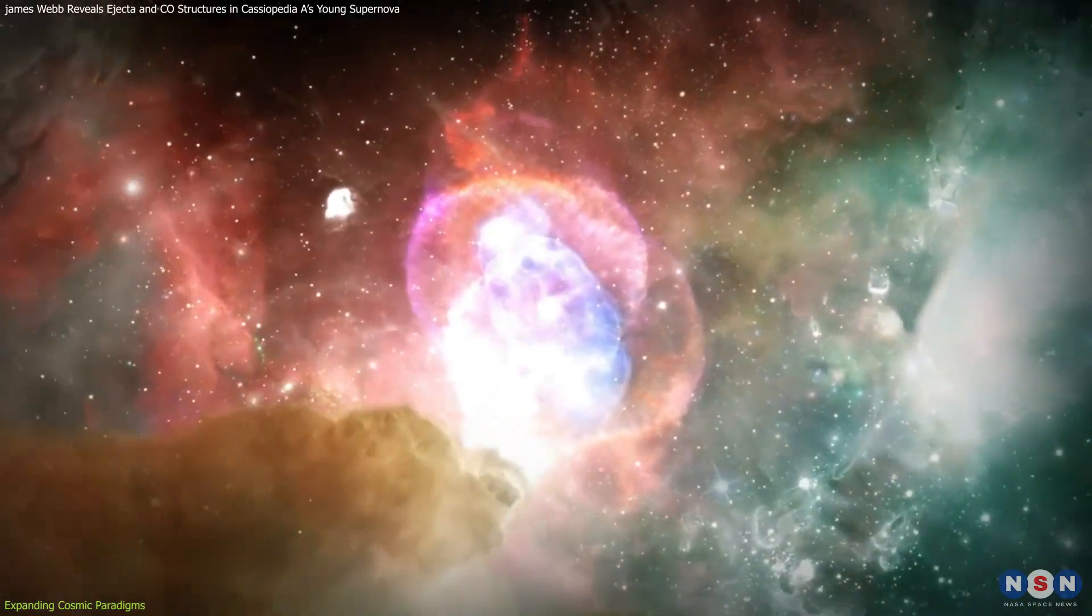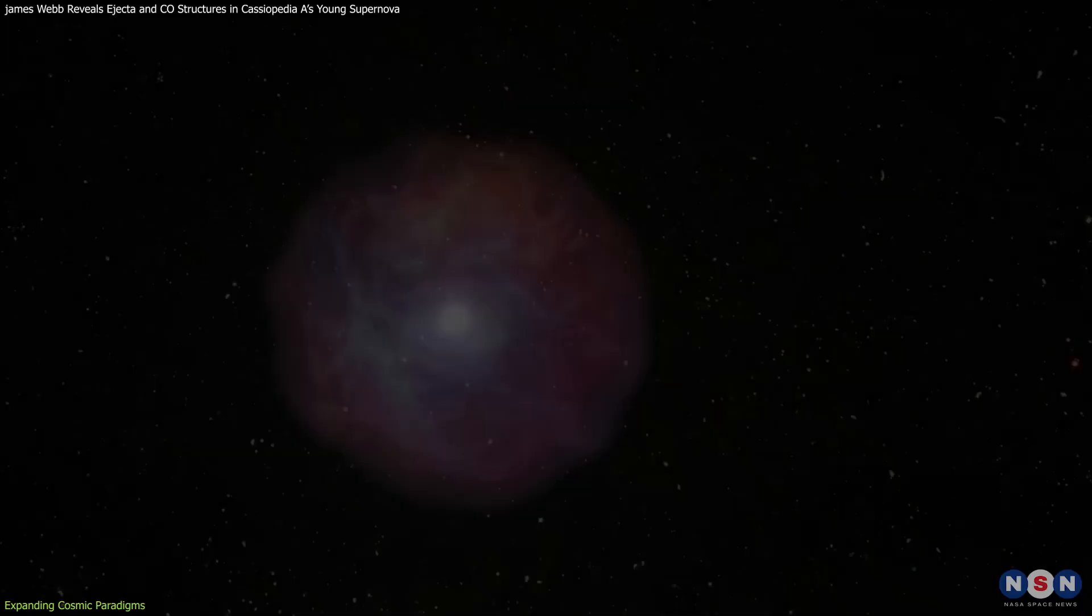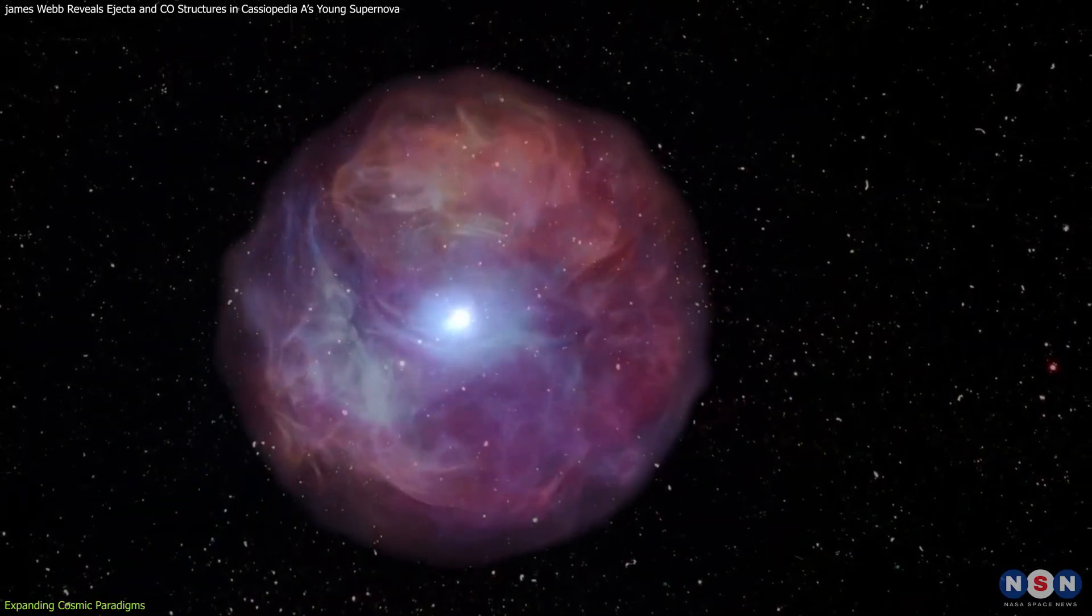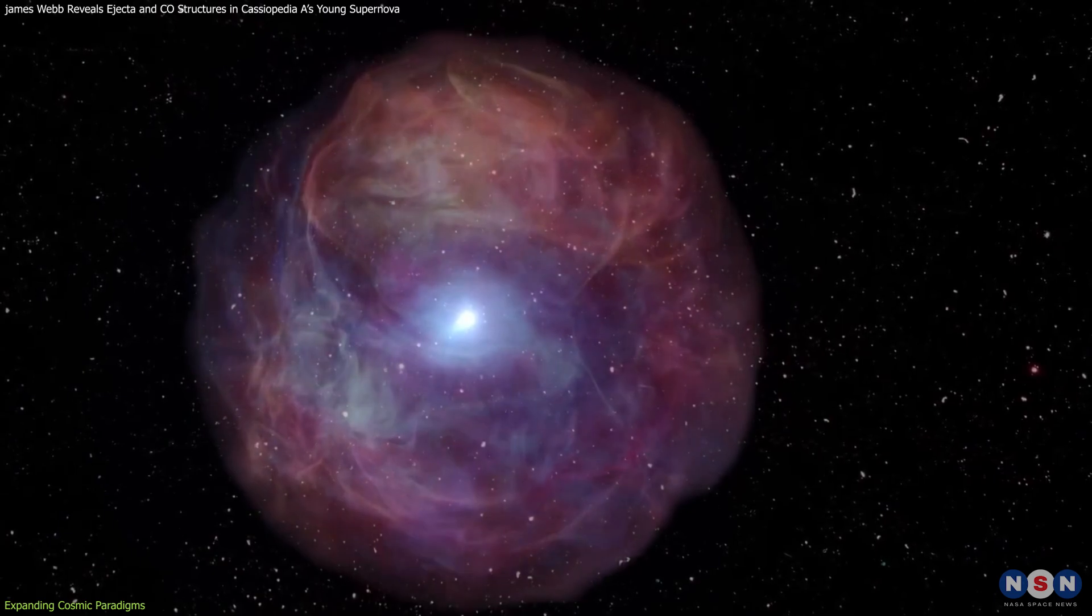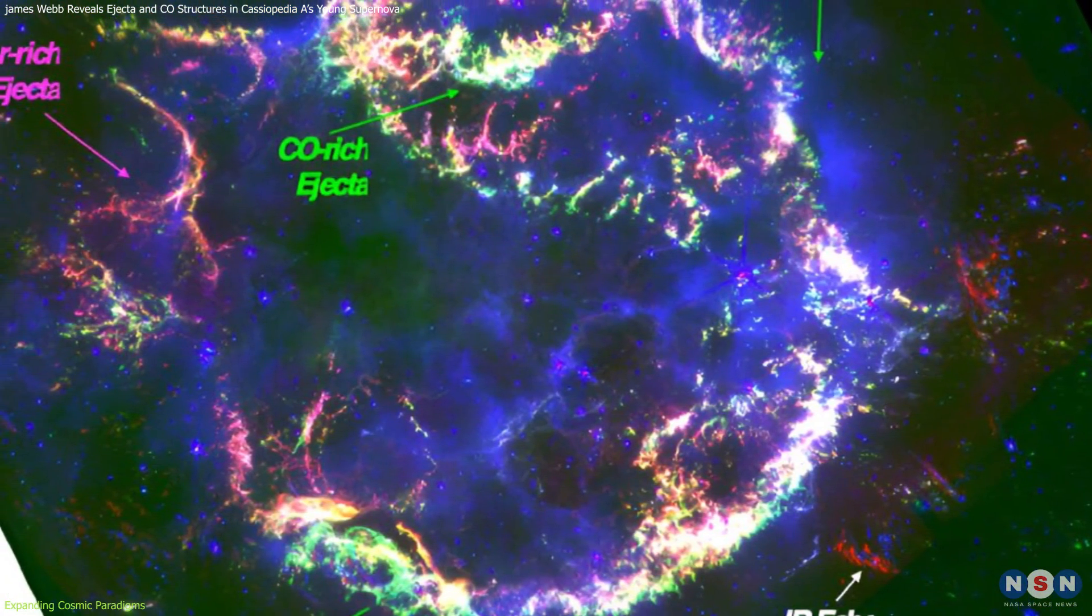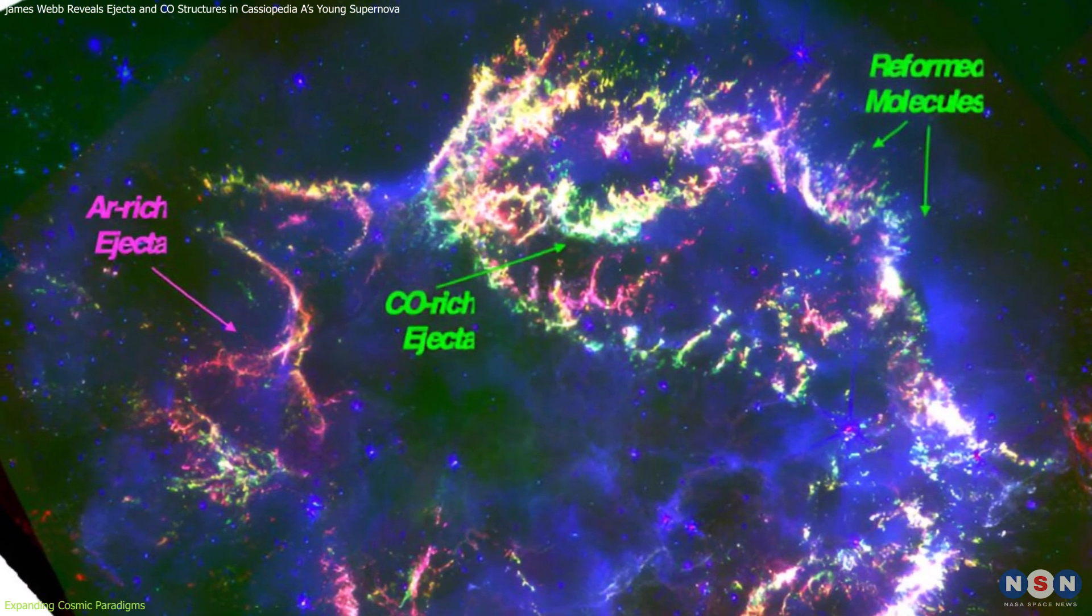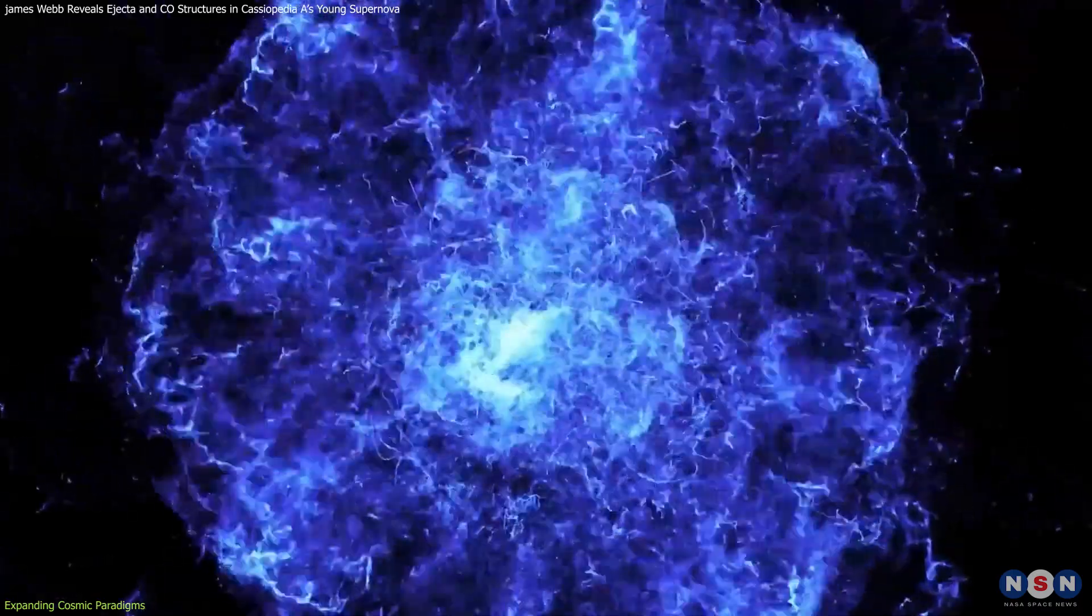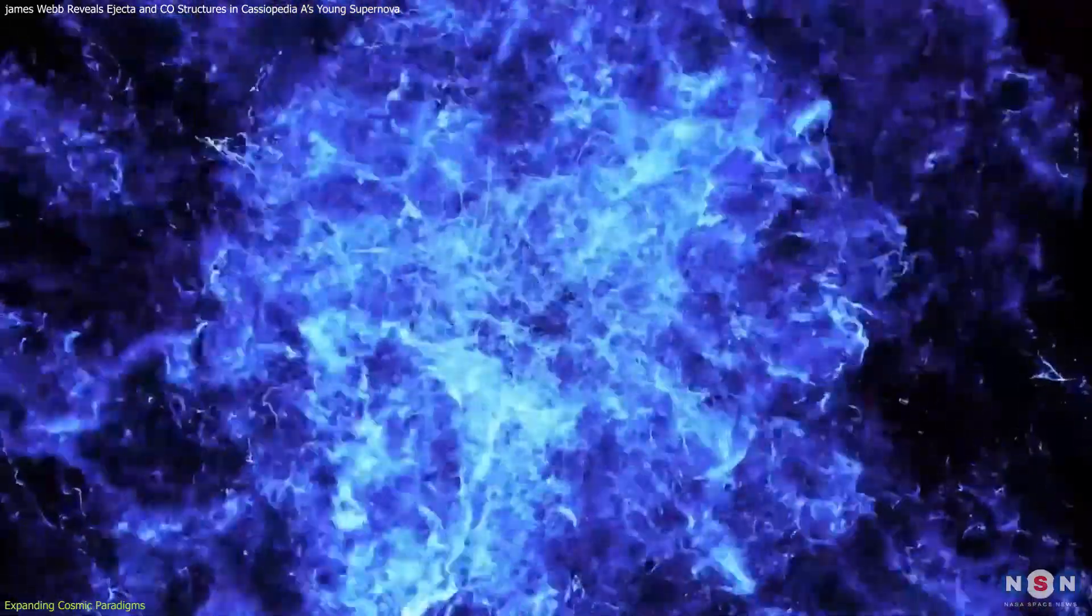This realization necessitates a revision of existing models to account for the dynamic and constructive role of supernovae in galactic evolution. Furthermore, the detailed observations of varying levels of carbon monoxide and argon within Cassiopeia A underscore a complex chemical interplay occurring post-explosion.